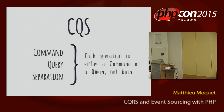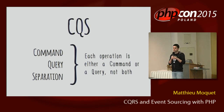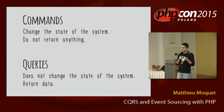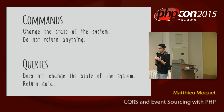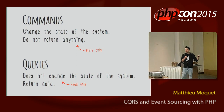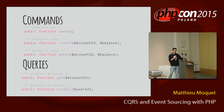Let me introduce the first pattern: CQS, which stands for Command-Query Separation. For each operation, you need to decide whether it's a command or a query. A command is something that changes the state of the system and does not return anything. A query, on the opposite, does not change the system at all but only returns data. In other words, it's write-only and read-only. With my bank account service example, I have commands — open, credit, debit — and I can fetch data from the account: get and find all.